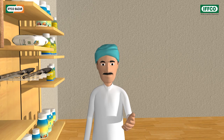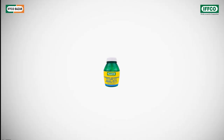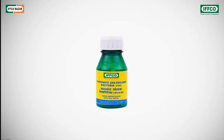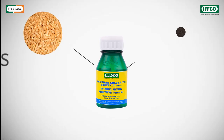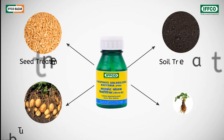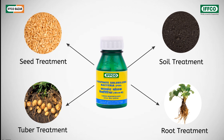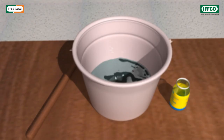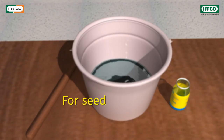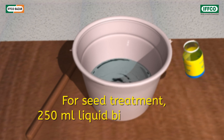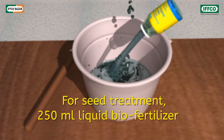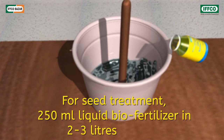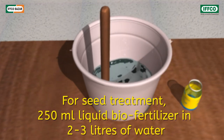It can be used for all crops such as grains, pulses, oilseeds, flowers, fruits, and vegetables. This bio fertilizer can be used in seed treatment, soil treatment, tuber treatment, and root treatment.